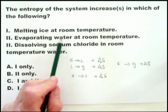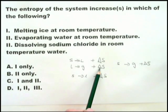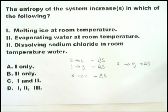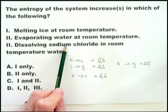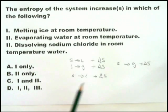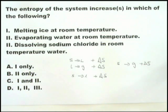Evaporating water at room temperature is a positive change in entropy because the molecules have greater freedom, and therefore there is an increase in disorder in the system, and therefore an increase in entropy. Dissolving sodium chloride in water is a positive change in entropy because the ions in sodium chloride are moving apart, they have greater freedom, there is more disorder in the system, therefore a positive change in entropy.